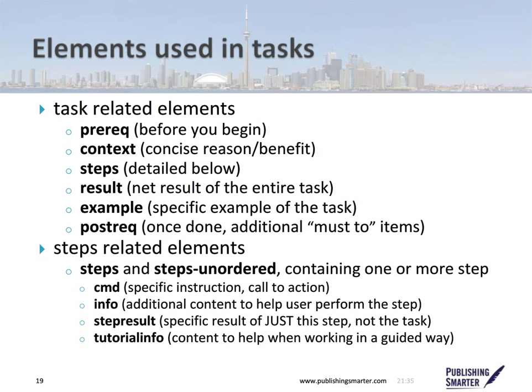A lot of these elements are things you'll often see inside a section or an example, within topics, concepts, and references. But the task body is made up of a couple of unique pieces. Inside a task, you might have a prerequisite — the information before you begin. The context — a summary of why somebody would do the task, what's the reason or the benefit. Some steps, which I'll explain in a few moments. The result, which is the net result of the entire task. An example, specific to the task. And a post-requisite — something that must be done after the task is completed, possibly a task onto itself.